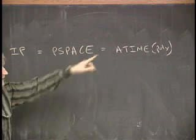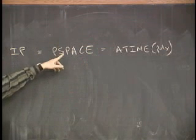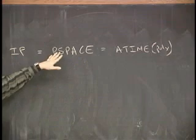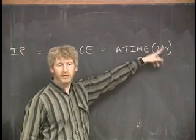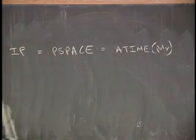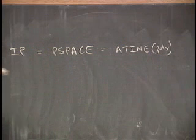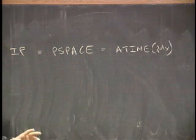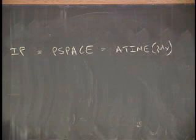So you know what P space is. You know what A time poly is. P space is deterministic algorithms that use polynomial space. A time poly are polynomial time algorithms that use alternating Turing machines. Interactive Protocol is not at all like any computation you've had so far. It's not exactly deterministic. It's not exactly non-deterministic. It's a conversation. We compute things by having a conversation.